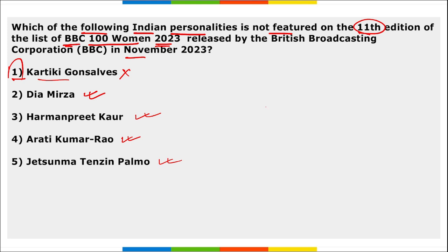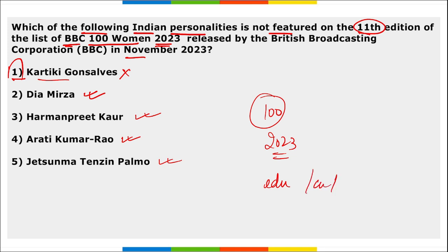This is a list of 100 inspiring and influential women from around the world for the year 2023. The list is organized into various categories including women from the education sector, culture, entertainment and sports, politics, science, health, and tech.